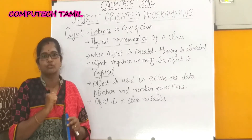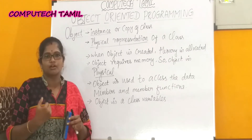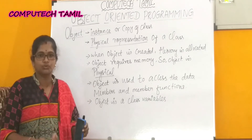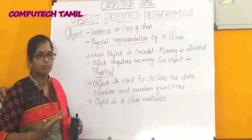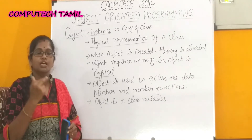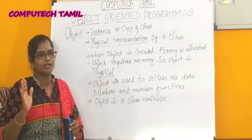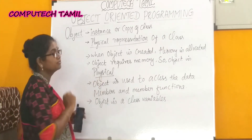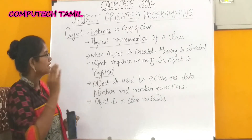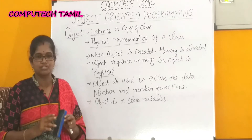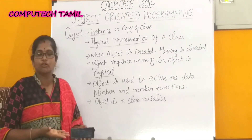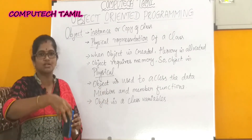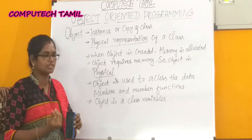How do we create an object? To access the data members and member functions of a class, object is created. When an object is created, memory is automatically allocated. That is the physical representation of a class. We use the object to access the data members and member functions of a class.